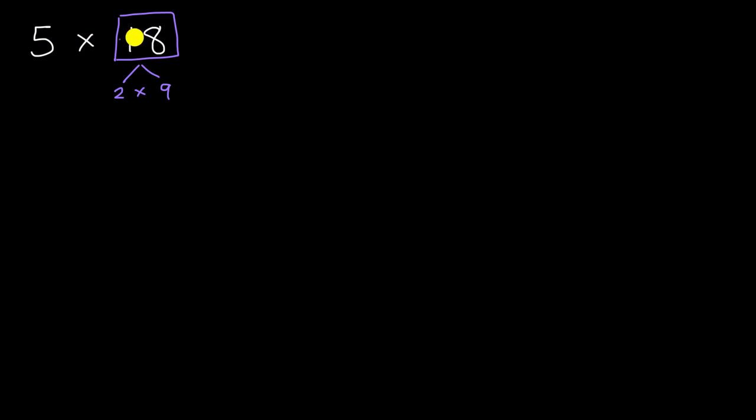And so I could rewrite 5 × 18. This is the same thing as 5 × instead of 18, I could write 2 × 9. Now, why does this help us?